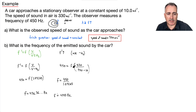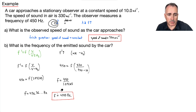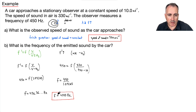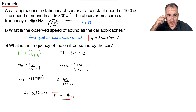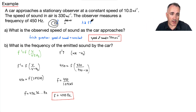This makes sense: what is actually emitted — 440 hertz — is lower than what is received — 450 hertz. Just as we've been learning, the observed frequency F-prime is higher when the source is approaching, which confirms our result.